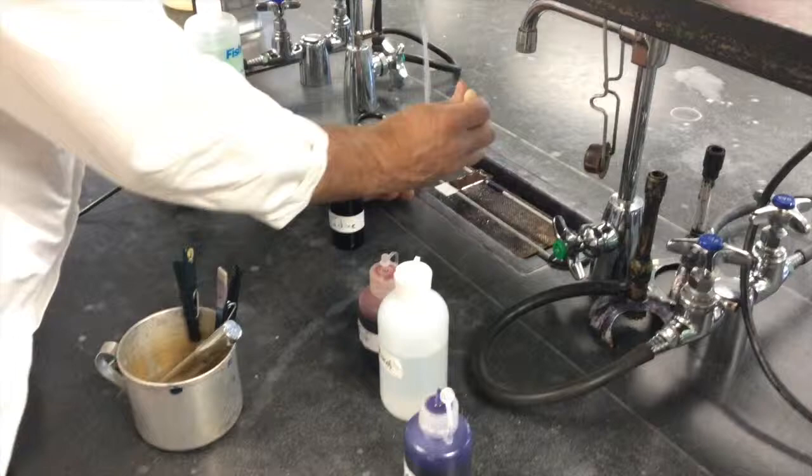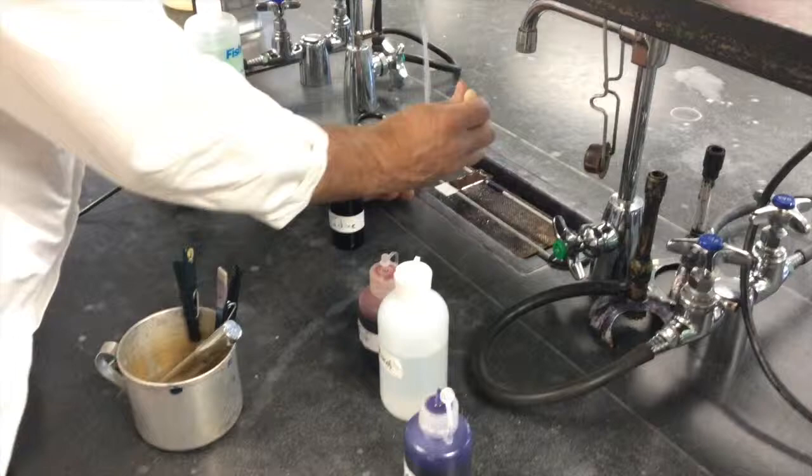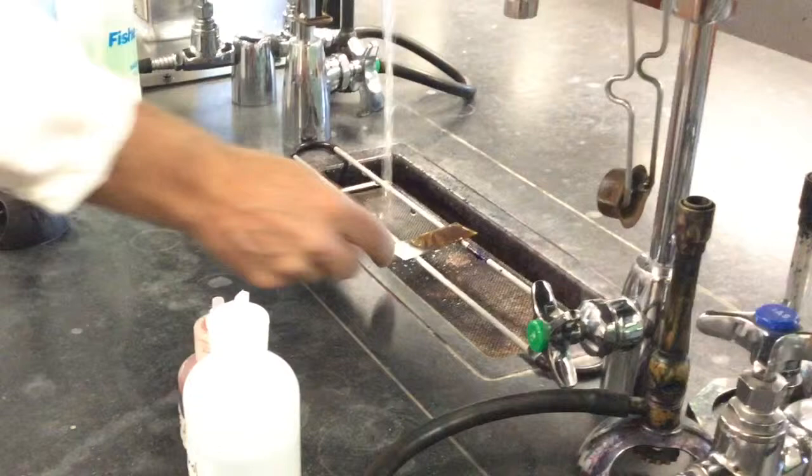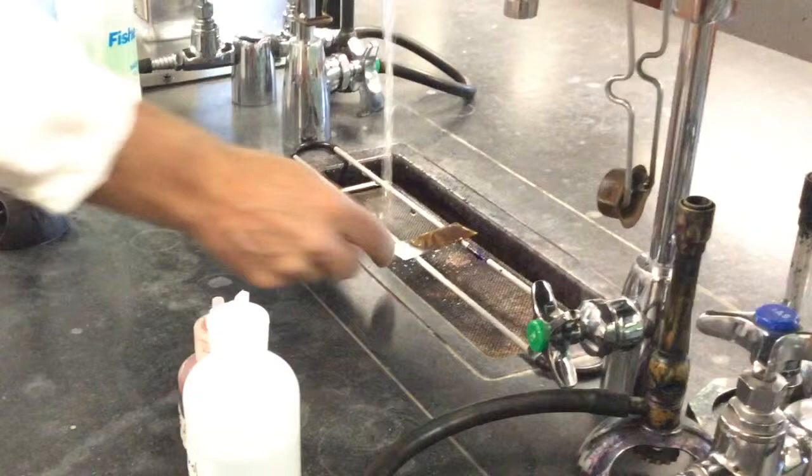So now you want to add iodine. Again, just flood the slide. You can actually sort of flood off the crystal violet with the iodine. But just let it sit for another minute. And that basically is complexing with the crystal violet within the cell walls so that it's harder for it to decolorize with the decolorization step. So it's been a minute.